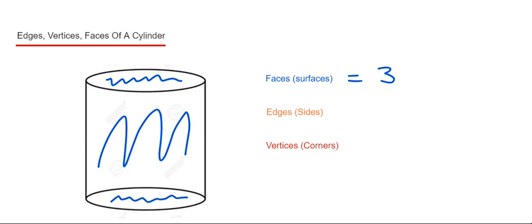Next we do the edges or the sides. The edges or sides are where the faces meet. We've got an edge here, and we've got another edge around the bottom. So that is two edges.